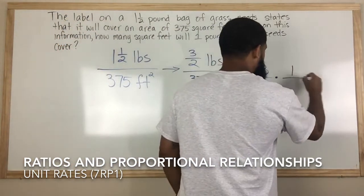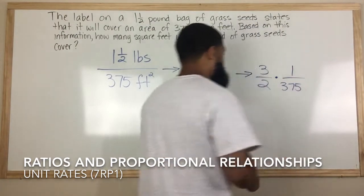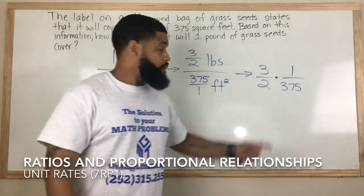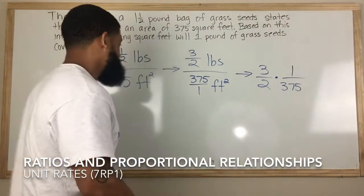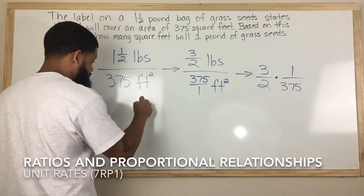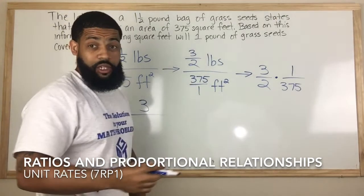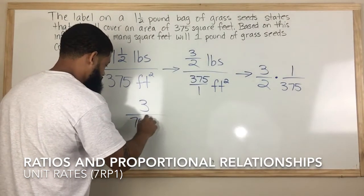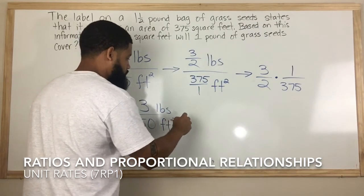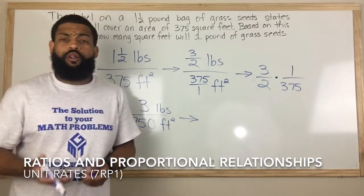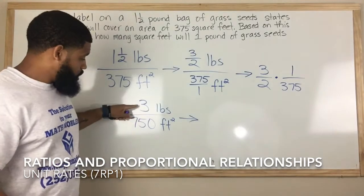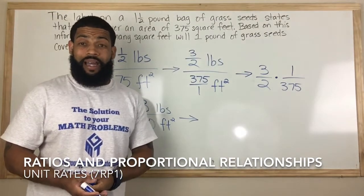Now that we have that, all we have to do is multiply the numerator times the numerator and the denominator times the denominator. So 3 times 1 is 3, and 2 times 375 is 750. This is still pounds and feet squared. That's an answer, but we want to reduce it to get down to 1 pound.